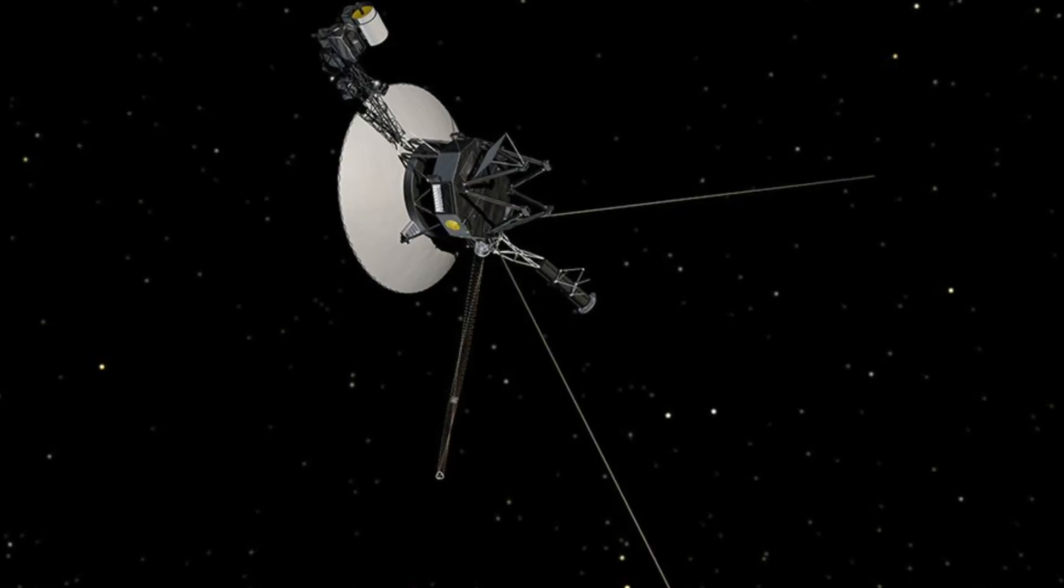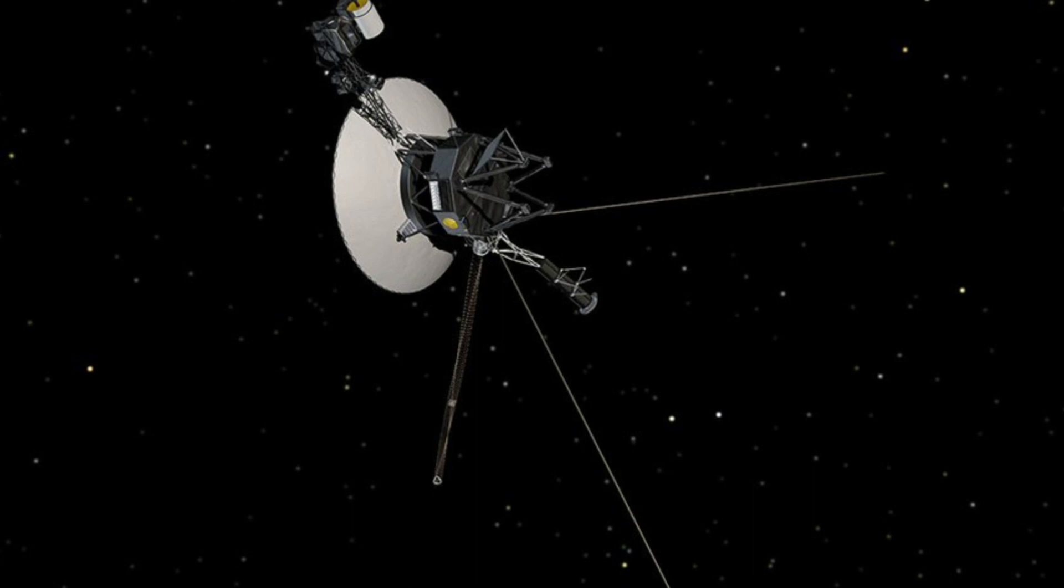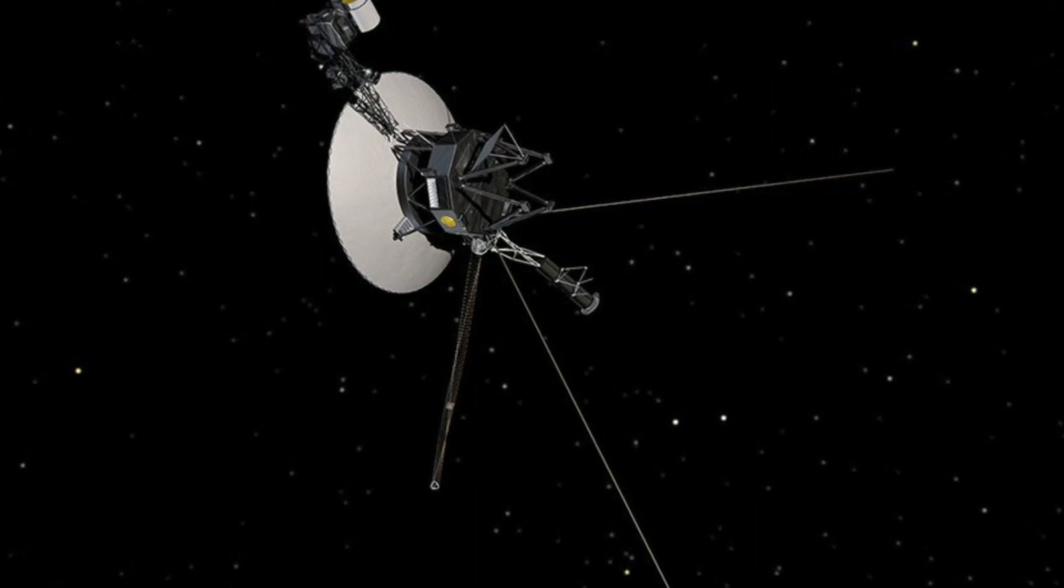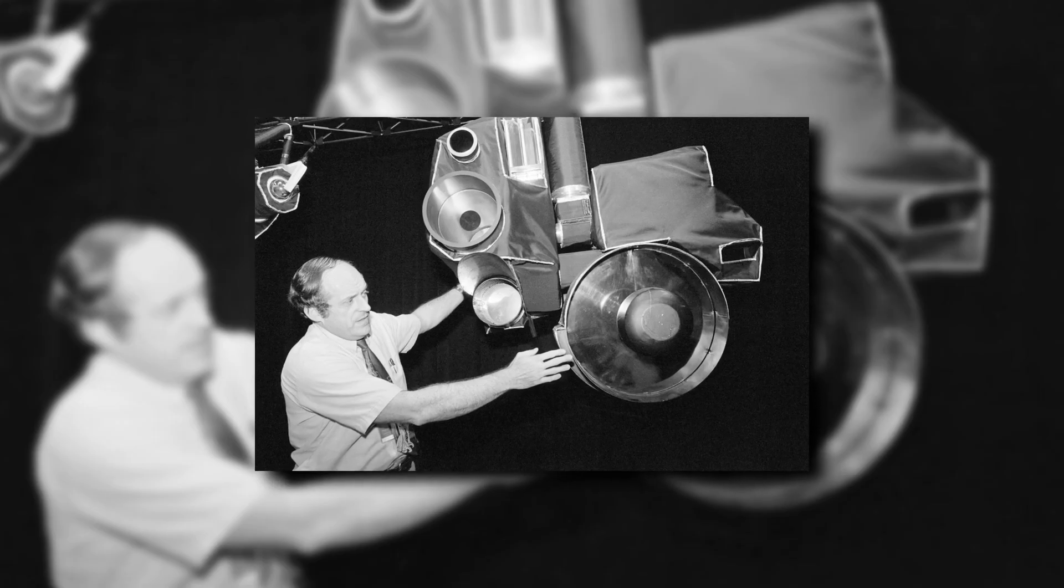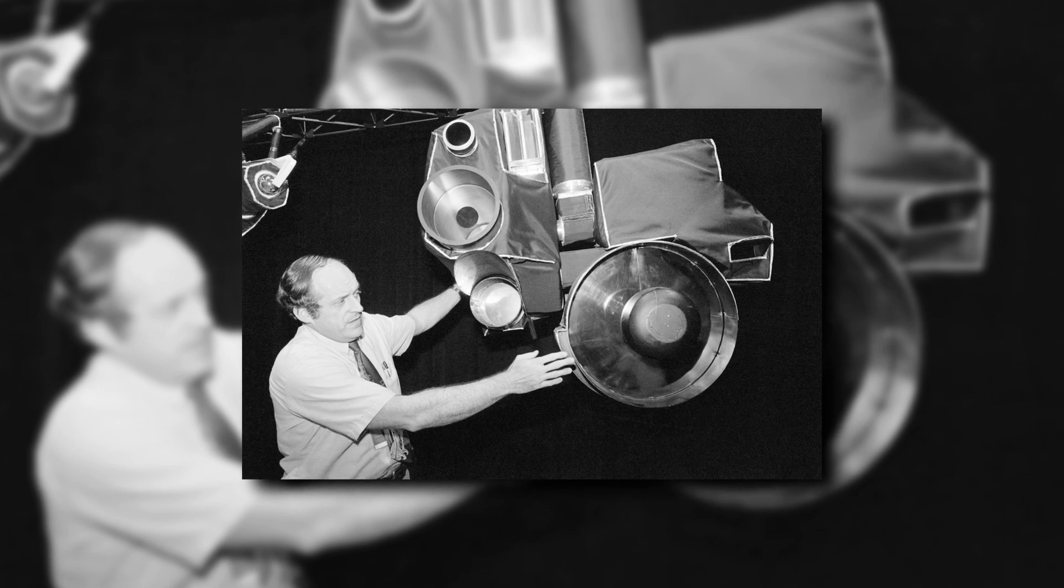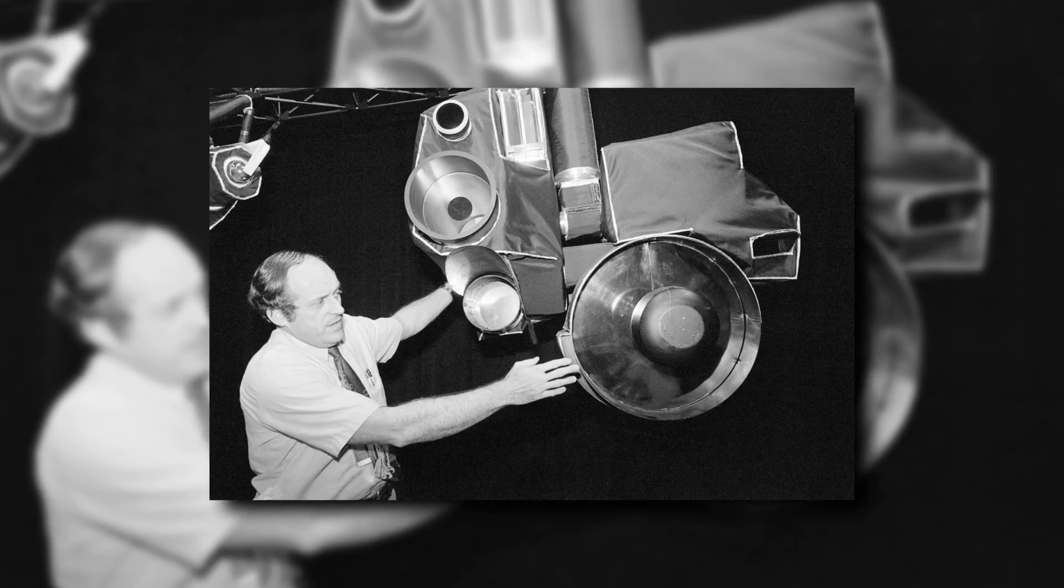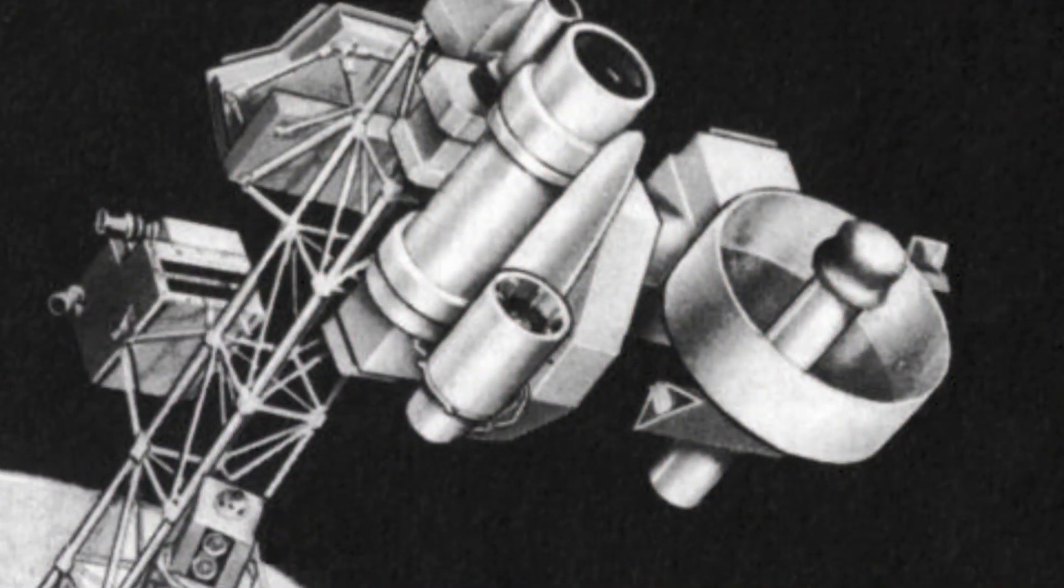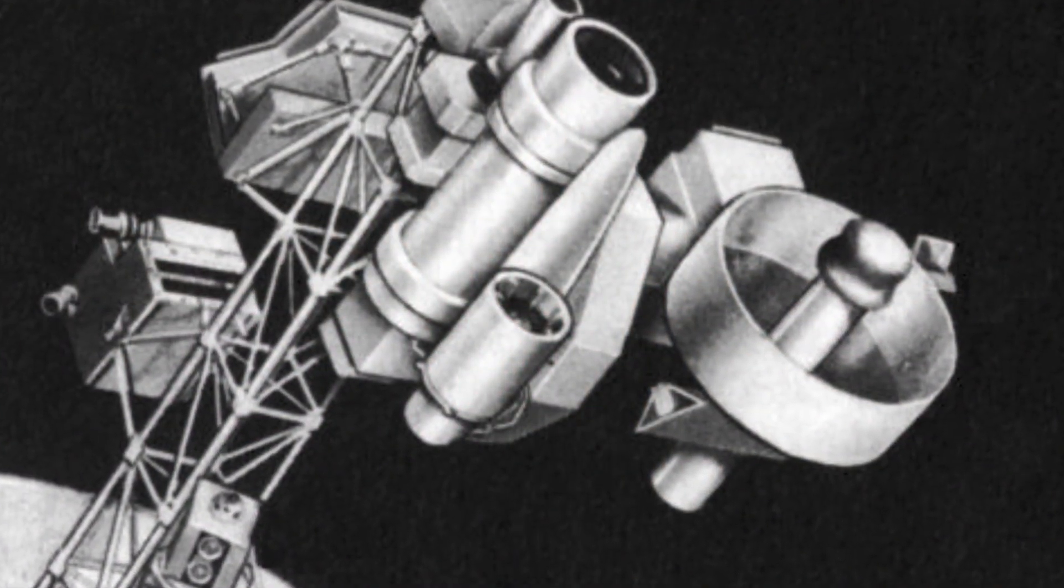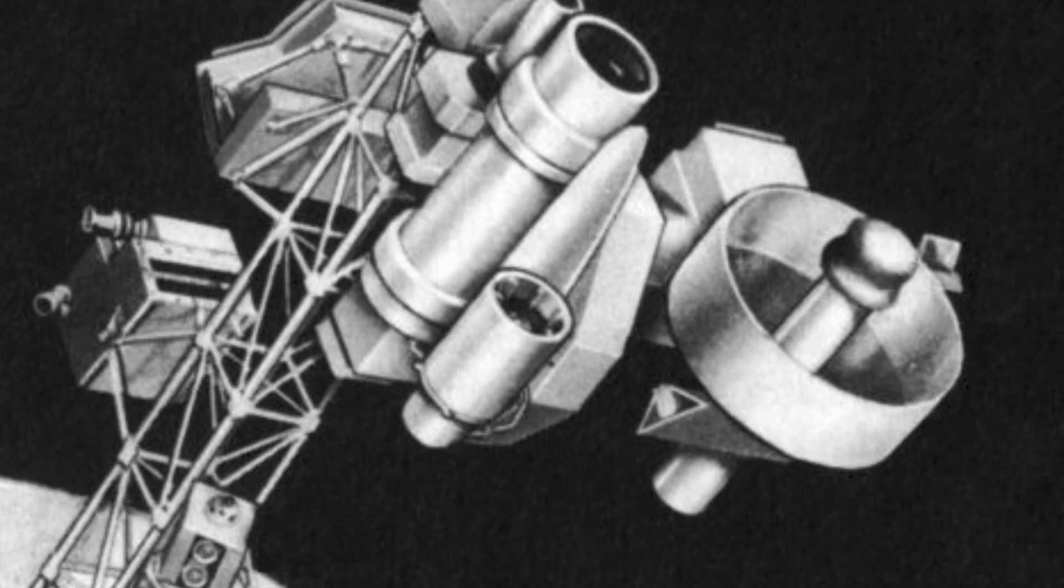The camera system in Voyager 1 is a prime example of how it was equipped with cutting-edge technology that was years ahead of its time. Two Vidicon cameras, which are effectively very early television cameras employing analog to digital technology, are present on Voyager 1. They are capable of capturing grayscale images in 8 bits with an effective resolution of 800x800 pixels.